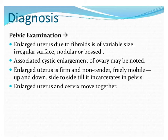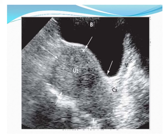To differentiate a fibroid from adenomyosis: fibroid is firm in nature, non-tender, and fairly mobile up and down but not side to side until it incarcerates in the pelvis. On pelvic examination, when we try to move the uterus, the fibroid moves with the uterus, whereas if it is a vein swelling it will not move with the uterus.